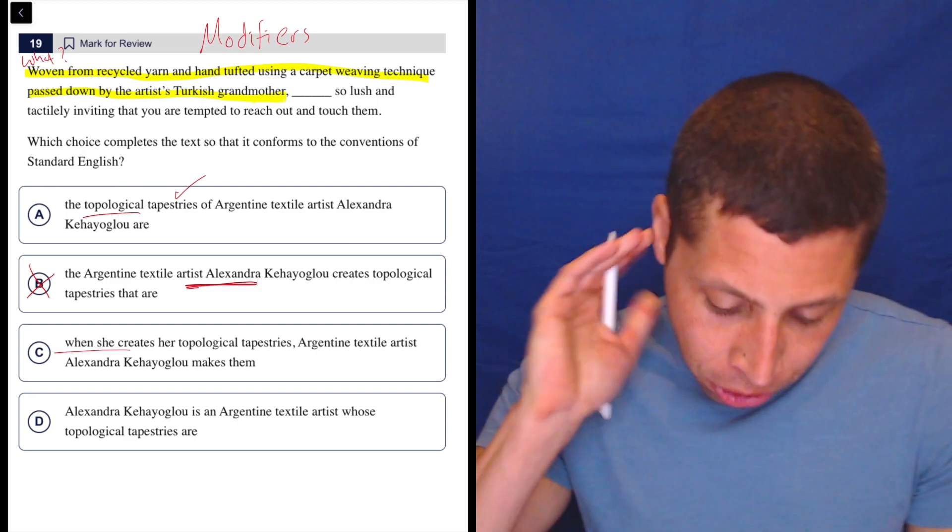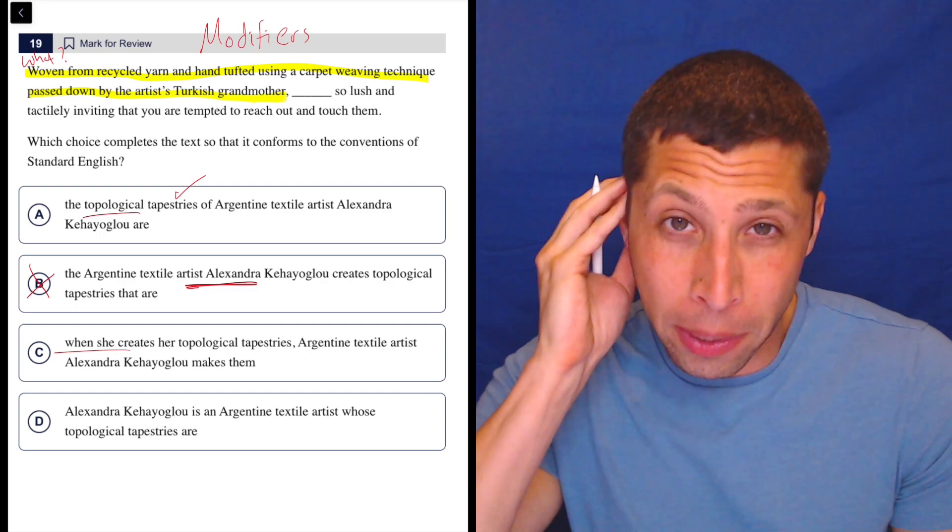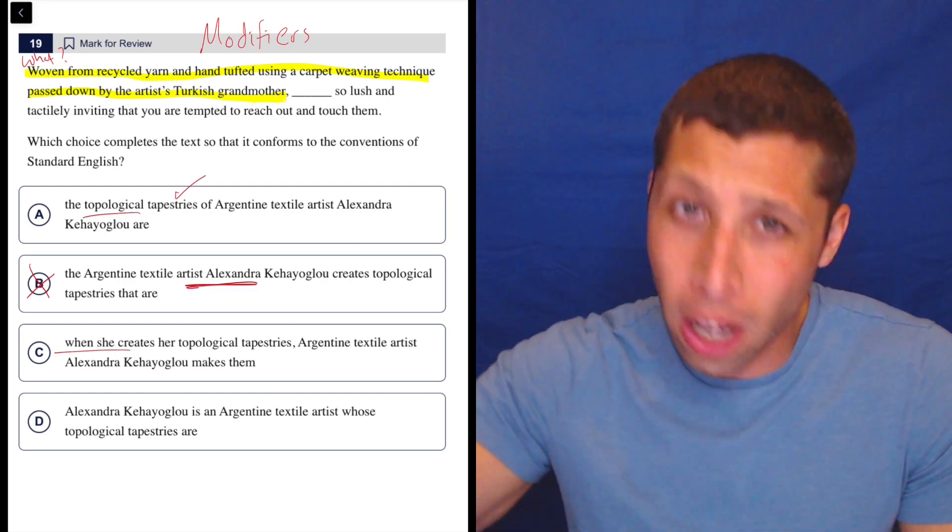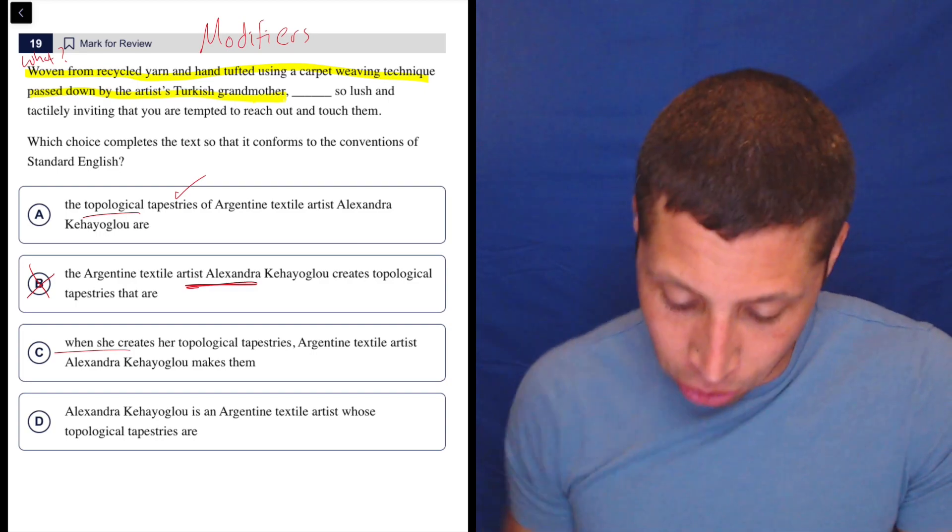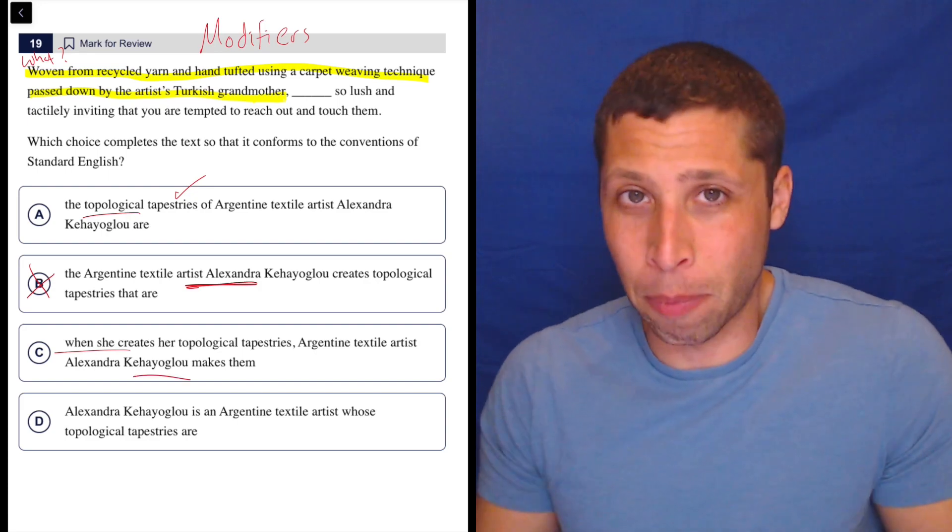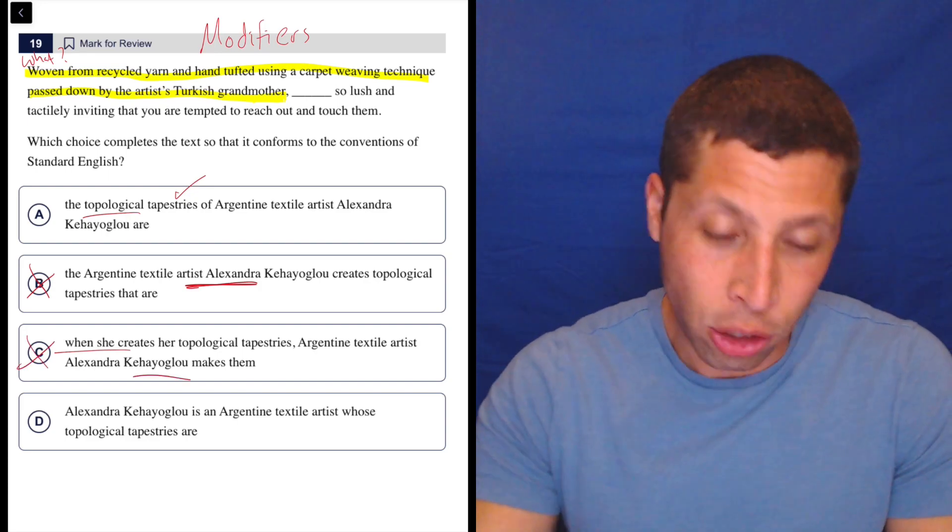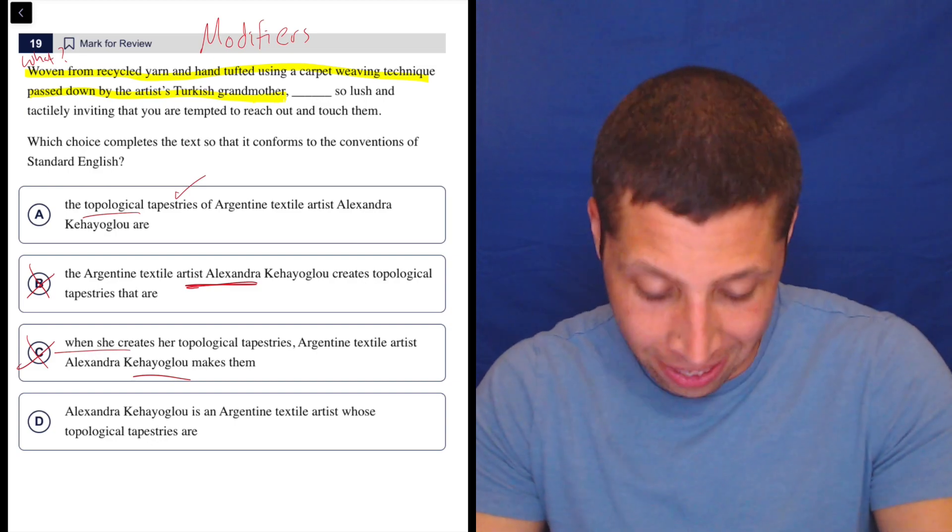C, when she creates her topological tapestries, well, this is weird because it's inserting another clause before we even get to the thing, which is, again, the person. We're talking about the person here. So no, we need to talk about the rugs, the tapestries.